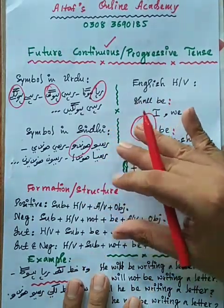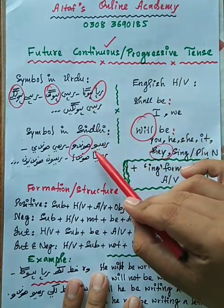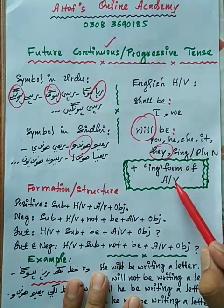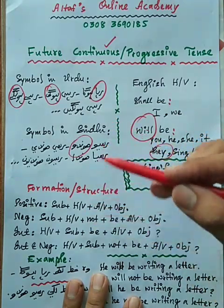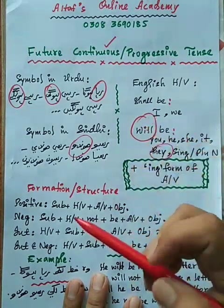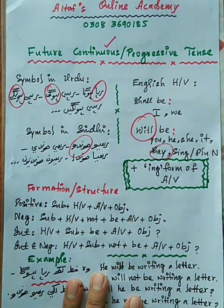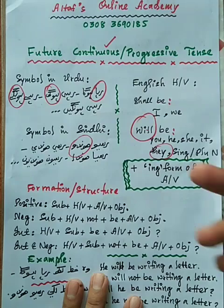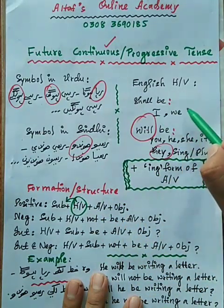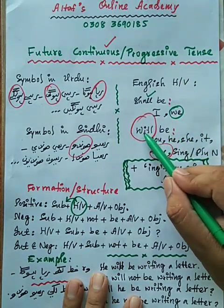Now let's look at the formation structure. If the sentence is positive, we check that the Urdu symbol matches and the action verb in English has -ing added, such as reading, coming, going, writing, opening, closing. If the sentence is positive, first comes the subject, then the helping verb — which depends on the subject: if I or we, use 'shall be'; otherwise 'will be'.